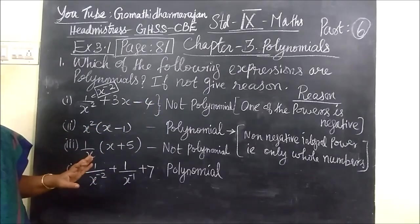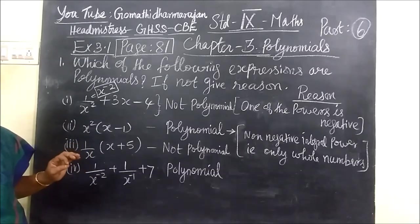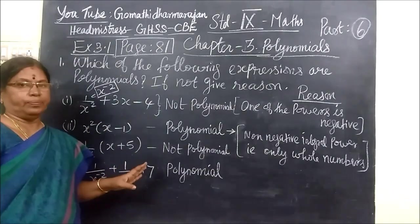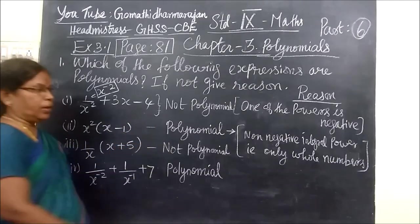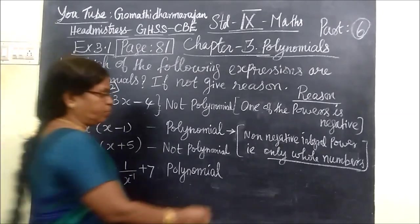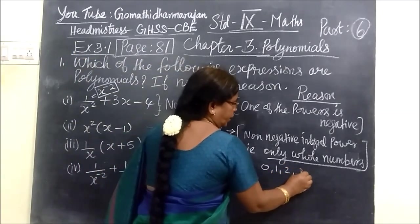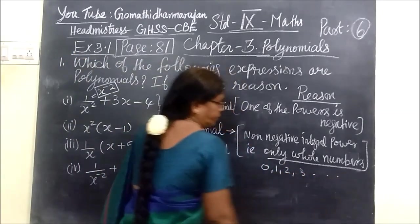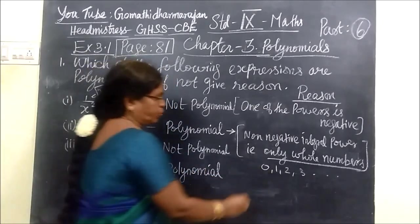For a polynomial, the power should be non-negative — it should not be negative. Non-negative means a whole number. It should be only a whole number. Whole numbers are 0, 1, 2, 3, etc. The power may also be 0.